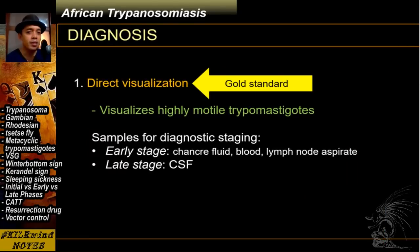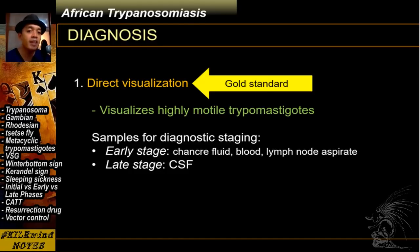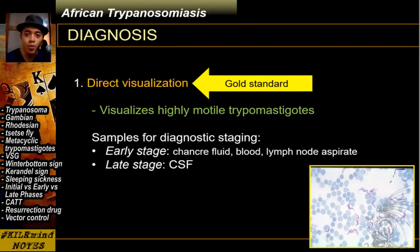How do you diagnose African sleeping sickness? As with most parasites, you have to see them to be 100% sure of their presence — direct visualization is still the gold standard. You can use the chancre fluid, blood, lymph node aspirates, or cerebrospinal fluid to try to detect the highly motile trypomastigotes. These would be the trypanosomes visible on a blood smear.